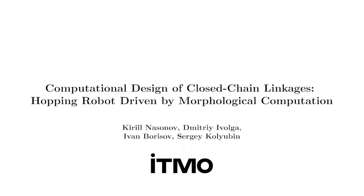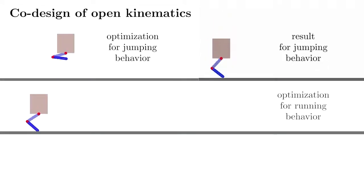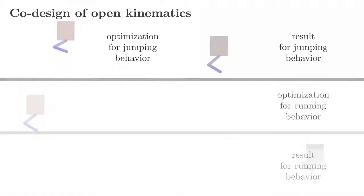We present a computational design method for generative design of robots driven by morphological computation. The first step, we search for an optimal structure, geometry, and joint trajectories of the open kinematics to provide the required motion.